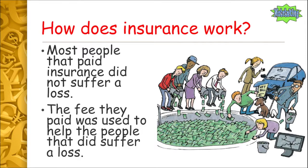Most people who paid insurance didn't suffer a loss, so the fees they paid were used to help those who did. The diagram shows a big pool of money with lots of people pouring money in to protect themselves against a possible loss. On the right, people dip into the pool to avoid suffering a financial loss. For example, someone with pet insurance gets money to cover a vet bill because their dog got sick, and a woman who crashed her car gets money from the insurance company to fix the damage.